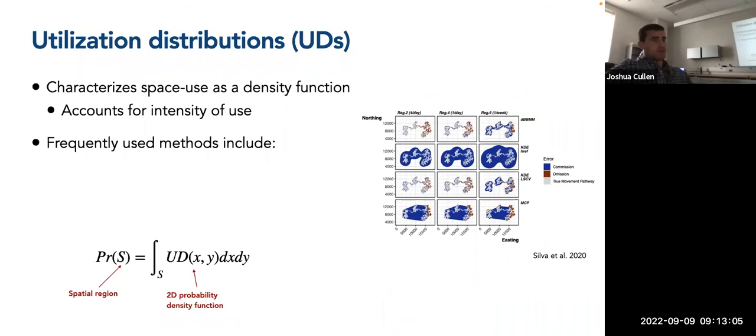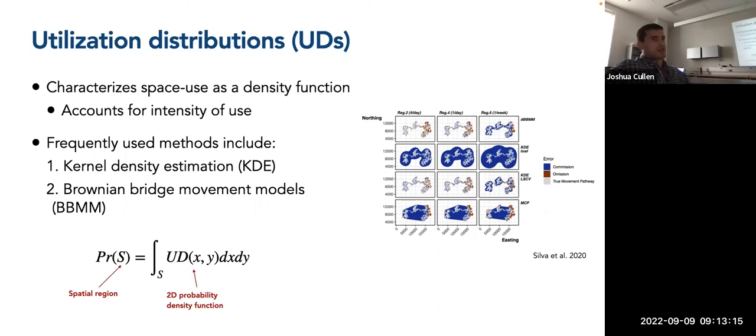And frequently used methods to estimate UDs or the utilization distributions include kernel density estimation, which I'm sure many of you are familiar with, as well as Brownian bridge movement models, which were originally proposed in I think 2007 by Horne and colleagues, which was adapted from a master's thesis that someone had written in 1999.